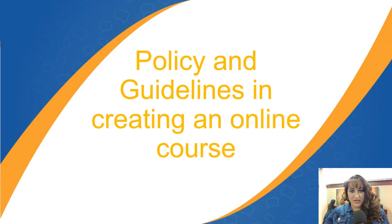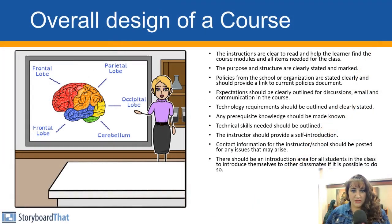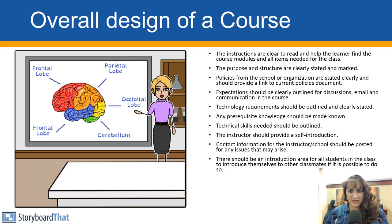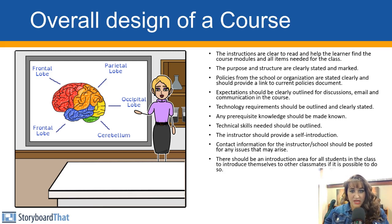Policy and guidelines in creating an online course. The overall design of a course must not be overlooked. Instructions should be clear and help the learner find course modules and all needed items. The purpose and structure must be stated clearly. Policies must be in place. Expectations should be clearly outlined for discussions, email, and communication. Technology requirements, prerequisite knowledge, and technical skills should all be clearly stated. The instructor should provide a self-introduction and post contact information. There should also be an introduction area for all students to introduce themselves.